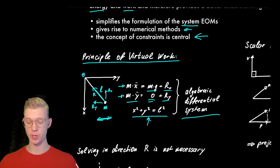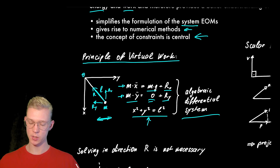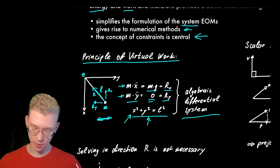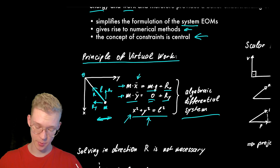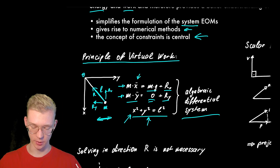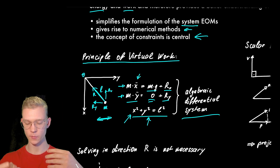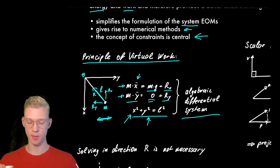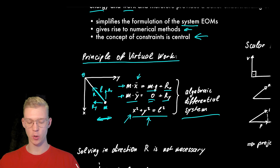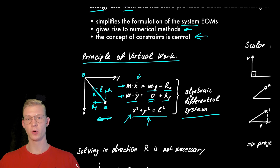Together, these three equations are considered an algebraic differential equation system. We have the algebraic part because of X squared plus Y squared equals L squared, and the differential part because we have X double dot and Y double dot. So in this case we have three equations and three unknowns: X, Y, and R. Now we have to solve them, but this is very difficult — or unnecessarily difficult — because we have a very simple system.